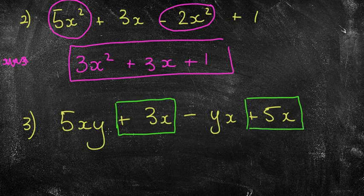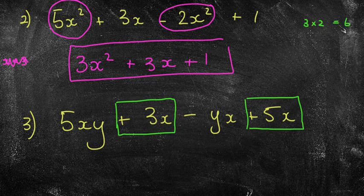I've got xy but I've also got yx. Now is that a like term? That's really interesting. I'm going to ask you this question. What is 3 times 2? Well hopefully you said 6. What is 2 times 3? Well hopefully you again said 6.